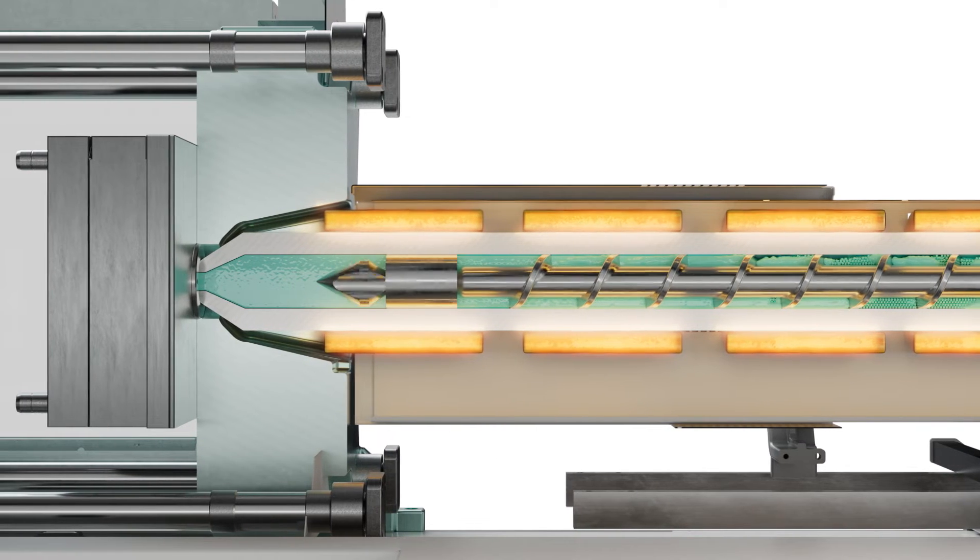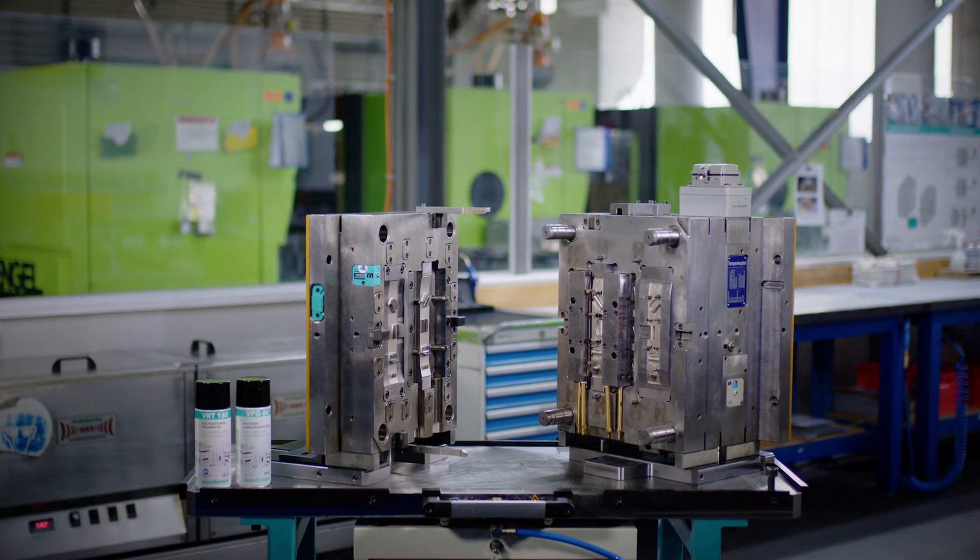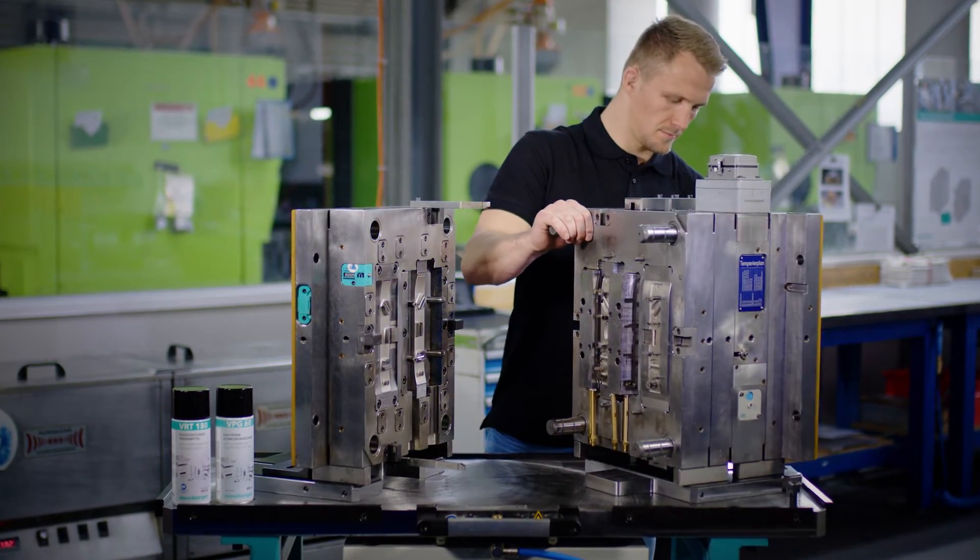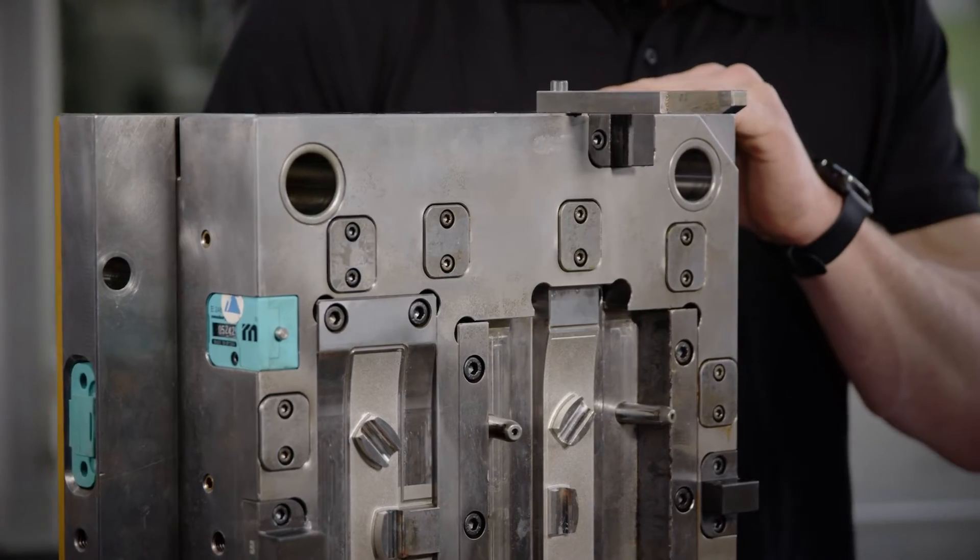Injection molds typically consist of two halves: a fixed half and a moving half. When the two halves are moved together, the geometry forms a perfect cavity for molding the spirit level.